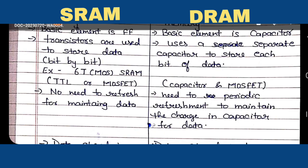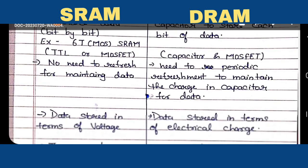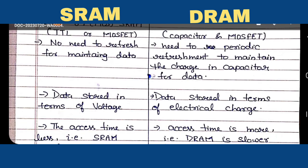In SRAM, transistors are used, so refreshing is not required to maintain data. In the case of DRAM, a capacitor is used, so a refreshing circuit is required to maintain the charge in the capacitor. SRAM stores data in the form of voltage.